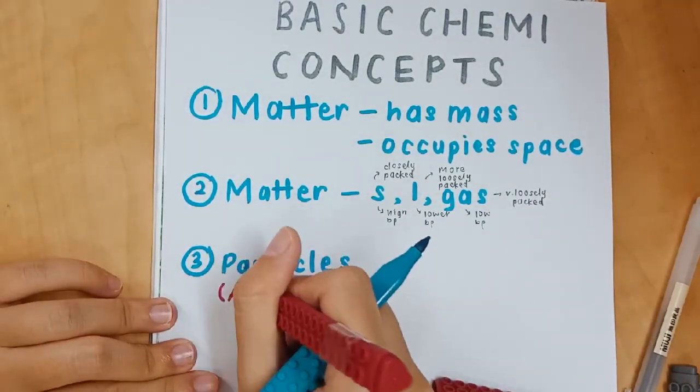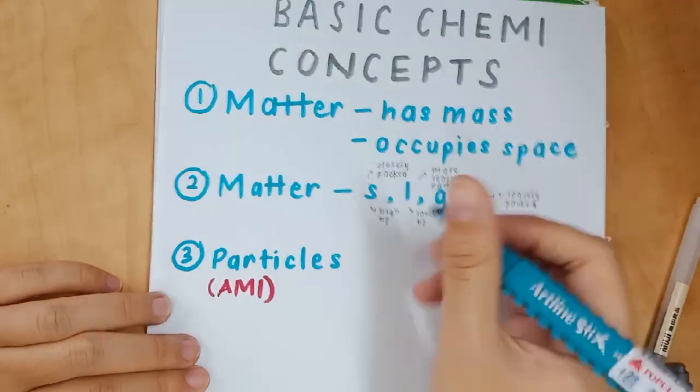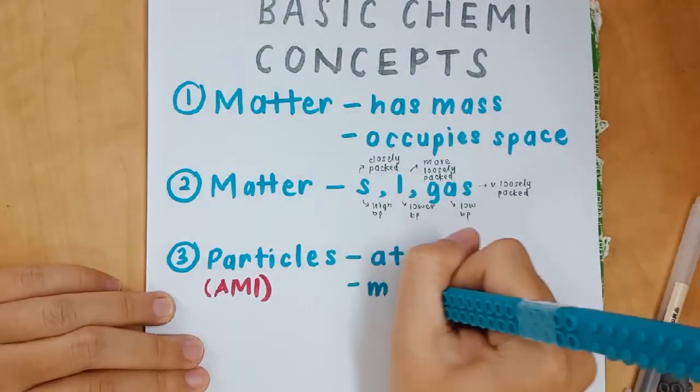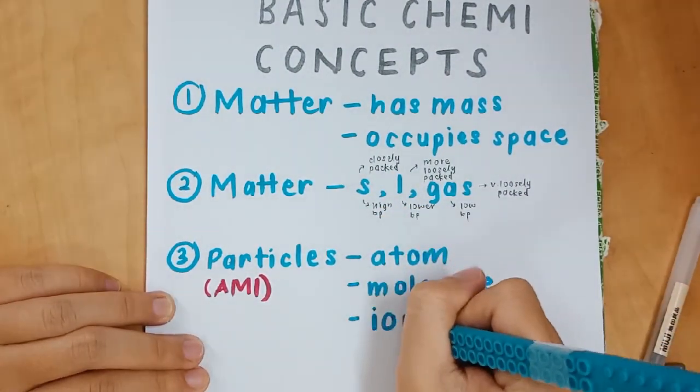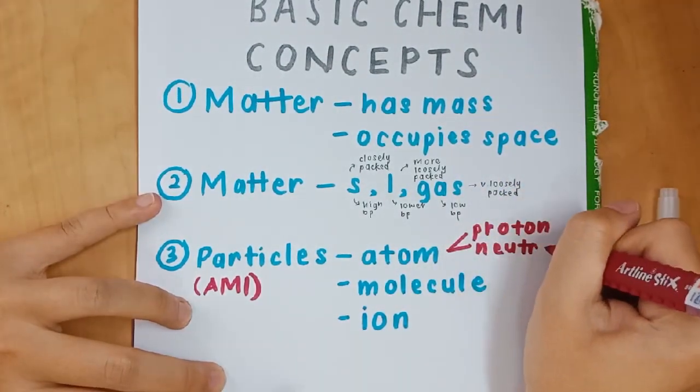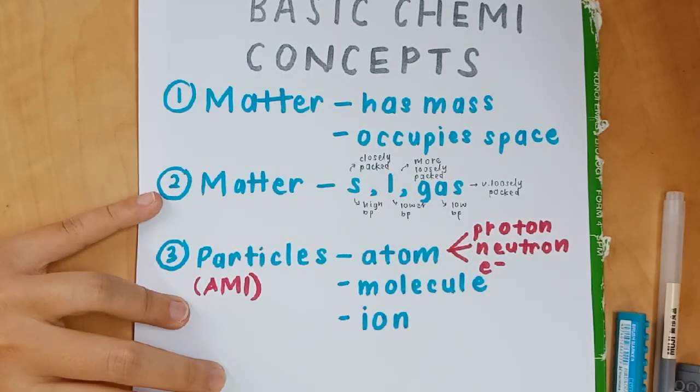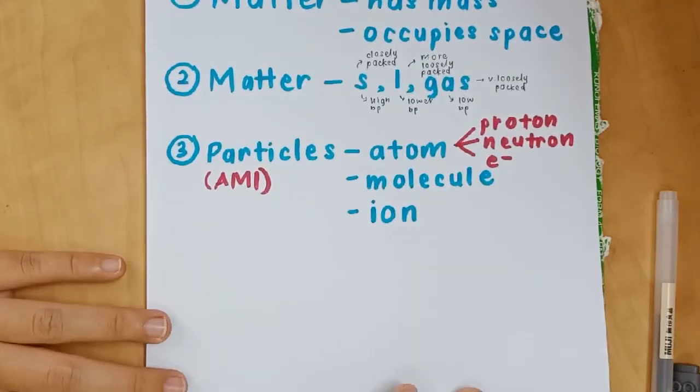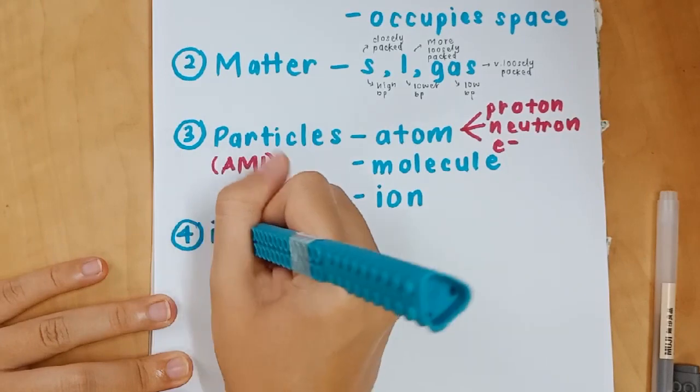Number three: particles. There are three particles, and I use the acronym AMI to remember them - atom, molecule, and ion. Inside those atoms, there are subatomic particles known as proton, neutron, and electron.